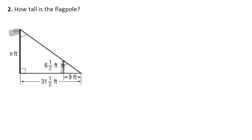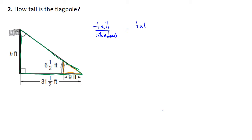Now we have question number two — how tall is the flagpole? We're not given any information except for this diagram. Just like our other diagram, we have a small triangle right here, and then we have a big triangle right here — I'm shading that in for you. We have some overlapping features here, but it's going to be the same proportion. So we can set it up as tall over shadow, equals tall over shadow.